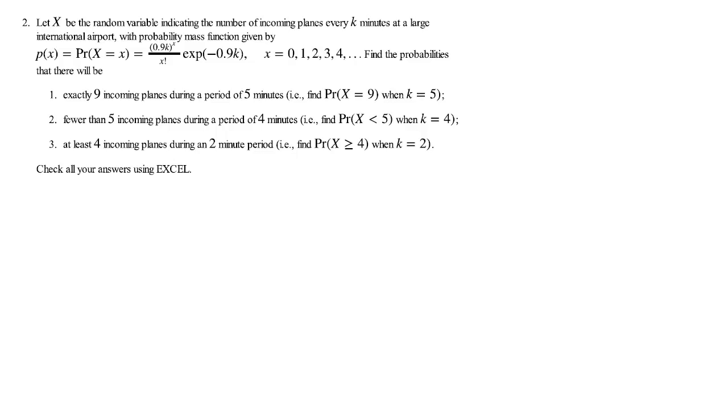This is question 2 in the probability random variable question set. We have been given information on a random variable labeled x, which should be the number of incoming planes every k minutes at a large international airport. We are given a probability mass function. Why is it called a mass function? Because this is a discrete random variable.